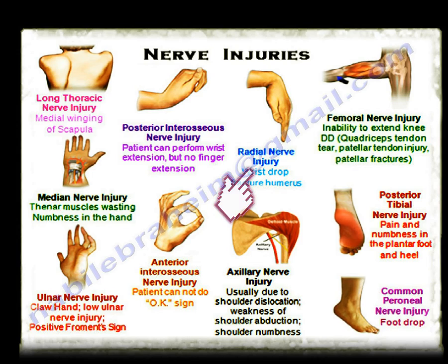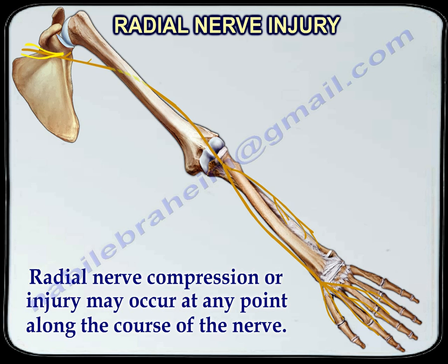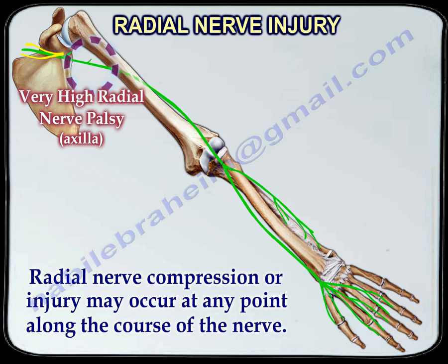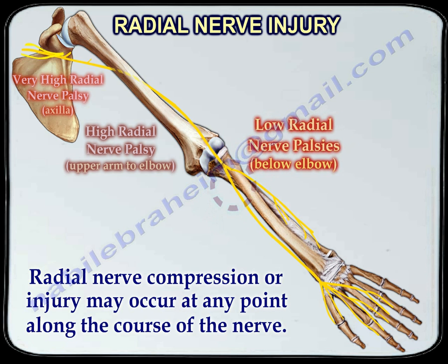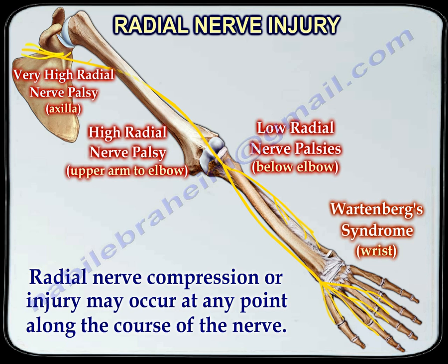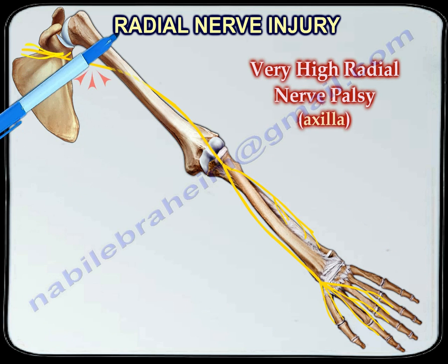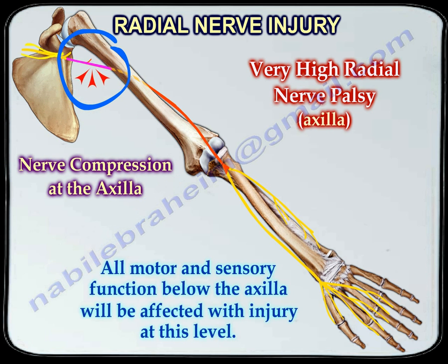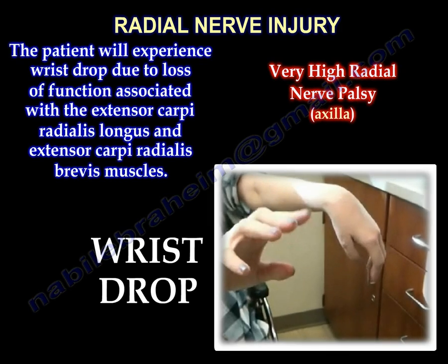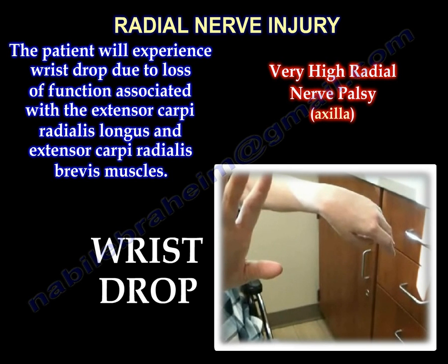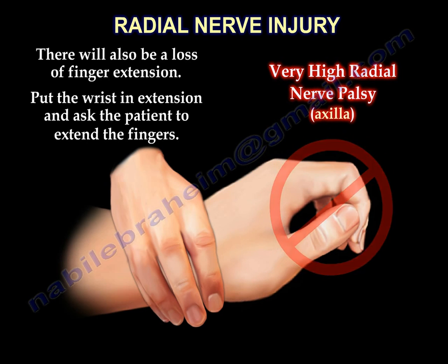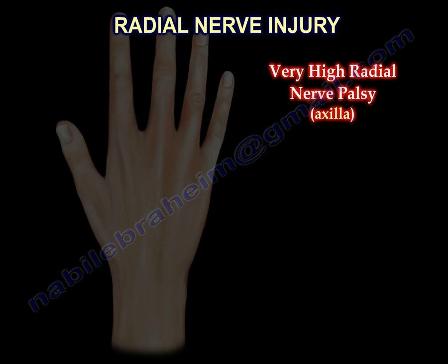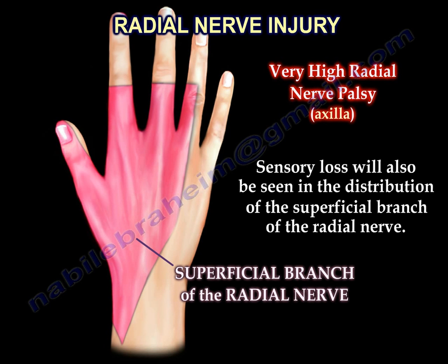Radial Nerve Injury. Radial nerve compression or injury may occur at any point along the course of the nerve. With very high radial nerve palsy, nerve compression occurs at the axilla. All motor and sensory function below the axilla will be affected with injury at this level. The patient will experience wrist drop due to loss of function associated with the extensor carpi radialis longus and the extensor carpi radialis brevis muscles. There will also be a loss of finger extension. Put the wrist in extension and ask the patient to extend the fingers. Sensory loss will also be seen in the distribution of the superficial branch of the radial nerve.